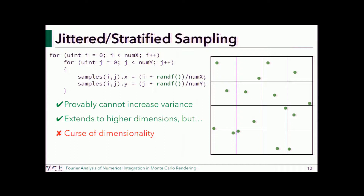With jittered sampling you can play around with stratum dimensions, unlike with the regular grid. However, it's not progressive: if you've given 16 samples and need another 10, you have to re-stratify for 26 total. You can add them, but the benefit of stratification is not fully achieved when done progressively.